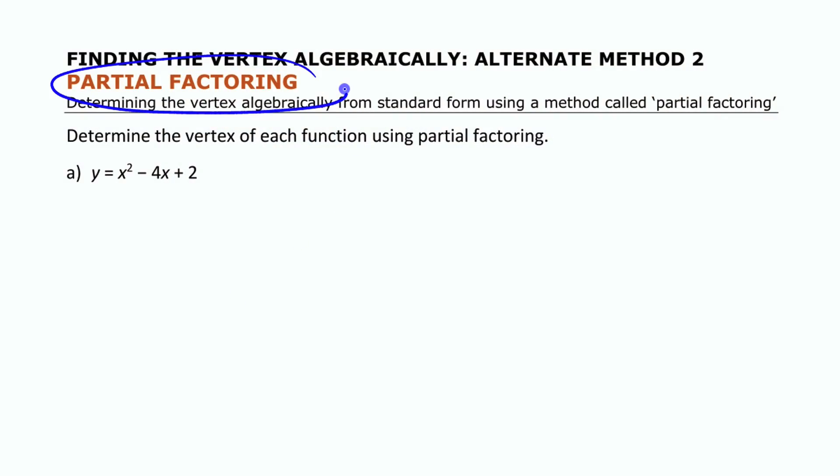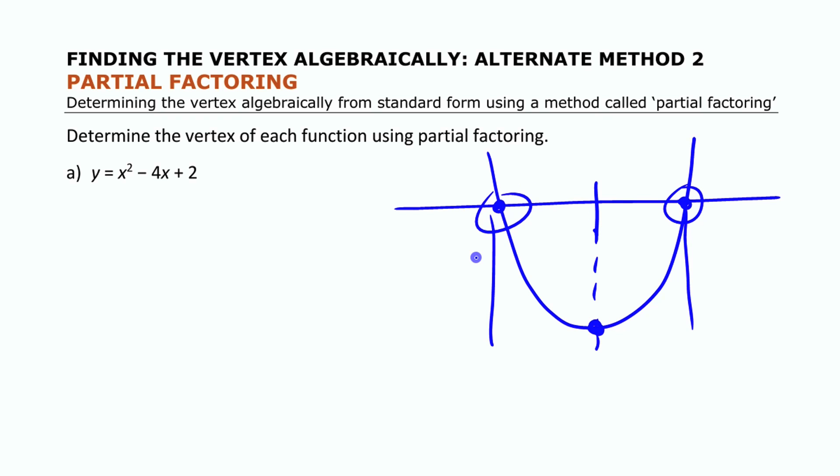So partial factoring, another alternate method of finding the vertex of a quadratic function, essentially involves knowing that the quadratic function is symmetric. If you know two x values for the same y value, then you know that the vertex has to be halfway in between those two and you can use it to find both coordinates of that vertex. So it involves finding those two points.